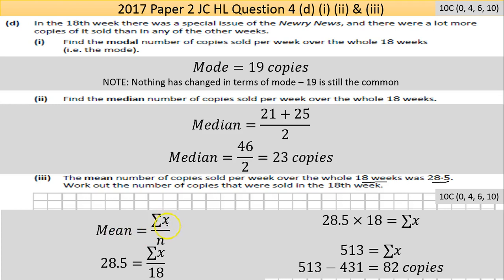So we have the mean formula we used earlier. Mean is equal to the sum of the data divided by the number of data points. Now we know what the mean is. We know that the n value has changed to 18. It was 17, but now it's the 18th week. But we don't know what the sum of those values is. But there's three unknowns, we know two of them. So we're going to solve for that unknown. Bring the 18 across, it was divided on the right, it becomes a multiplied on the left. Do that calculation, I got 513. So the sum of all the copies sold over the 18 weeks is 513. The sum of the copies sold over the 17 weeks is 431. The difference is the number of copies sold in that 18th week.